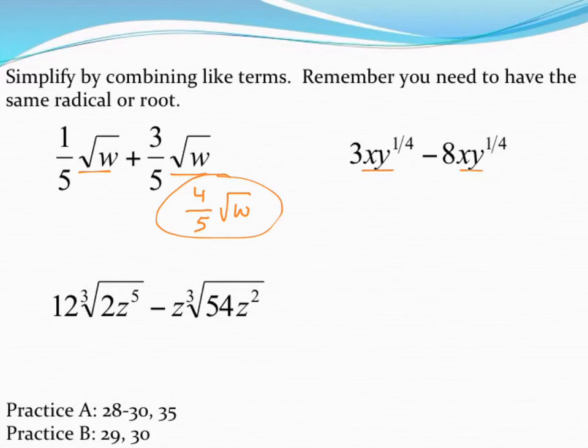Next up, once again, I have the same exact combination of variables and exponents. Same radicals, same everything. All that's different is the coefficients. Both have x times y to the one-fourth power. In that case, I can just subtract coefficients. Three minus eight gets me negative five. And once again, that piece at the end will not change. So negative five x y to the one-fourth power.